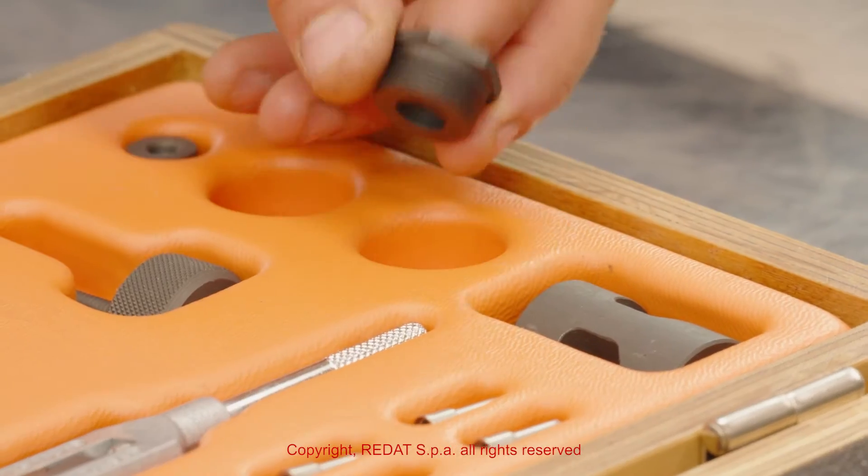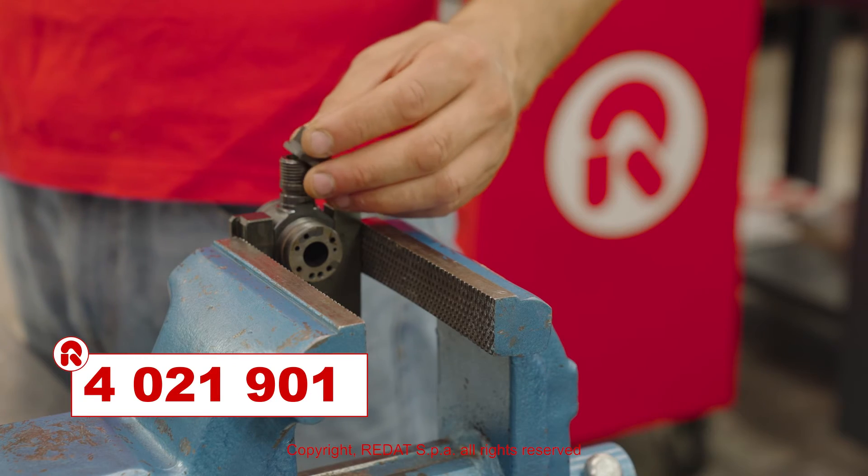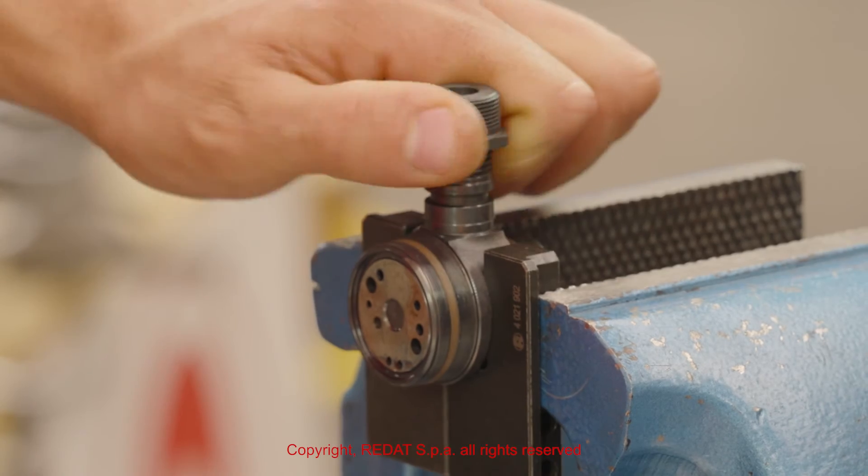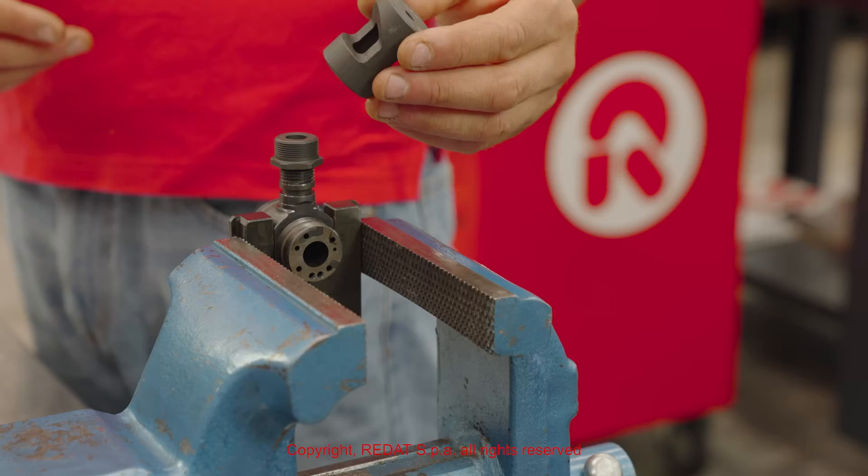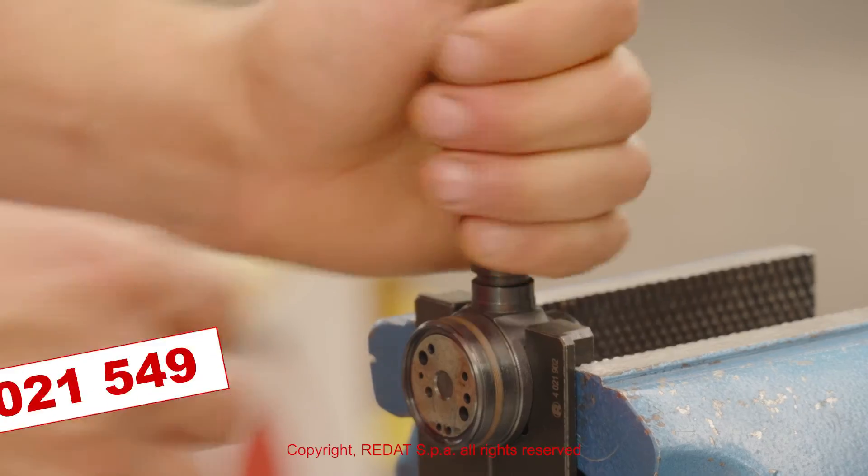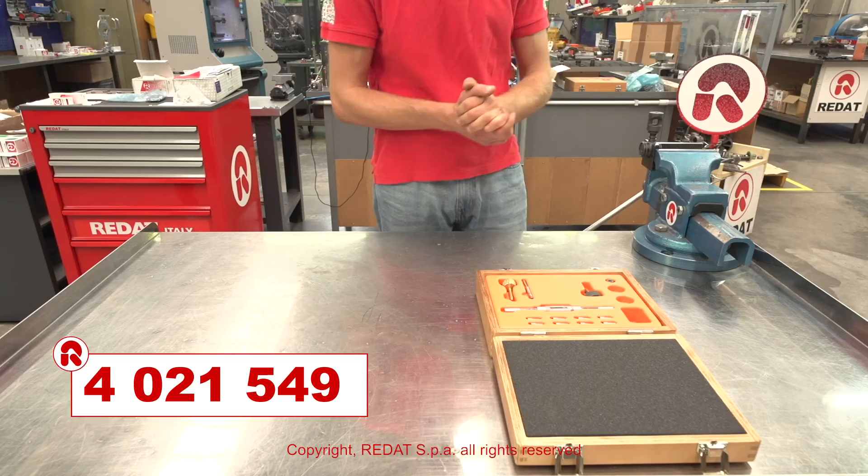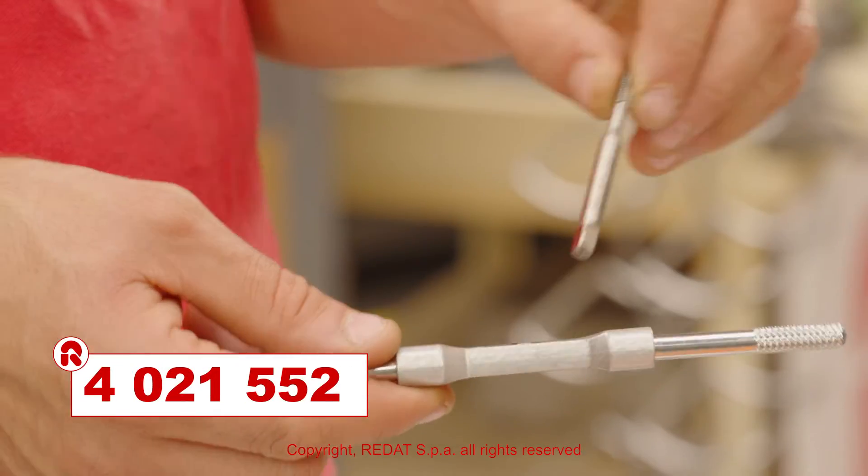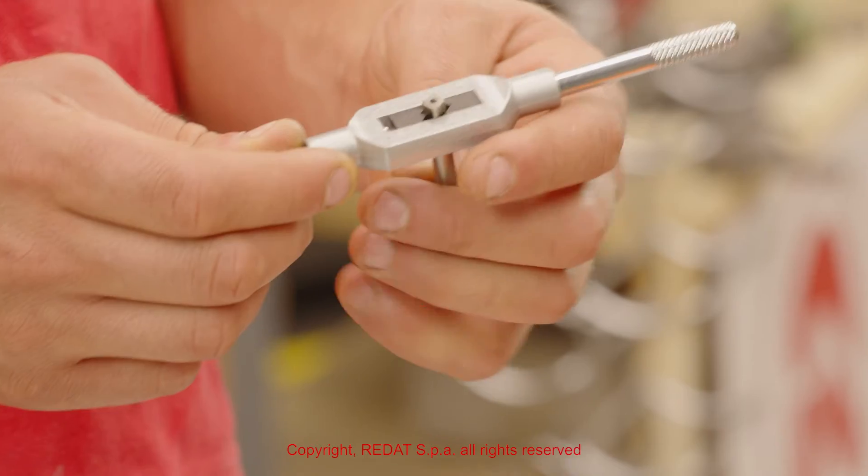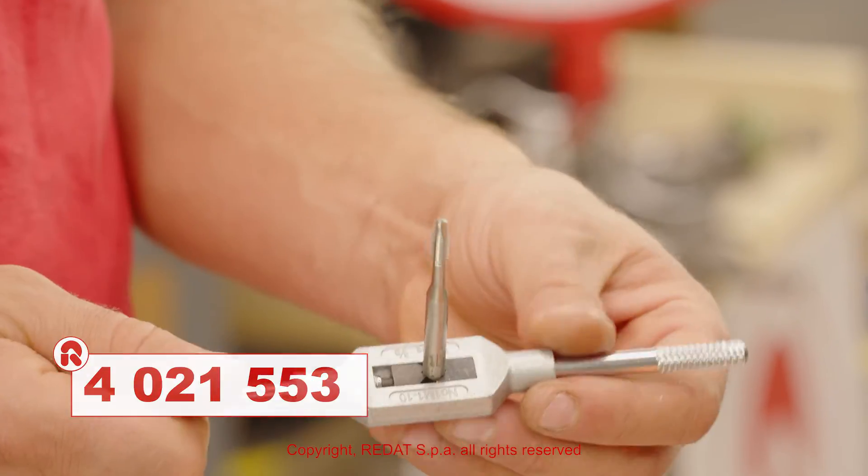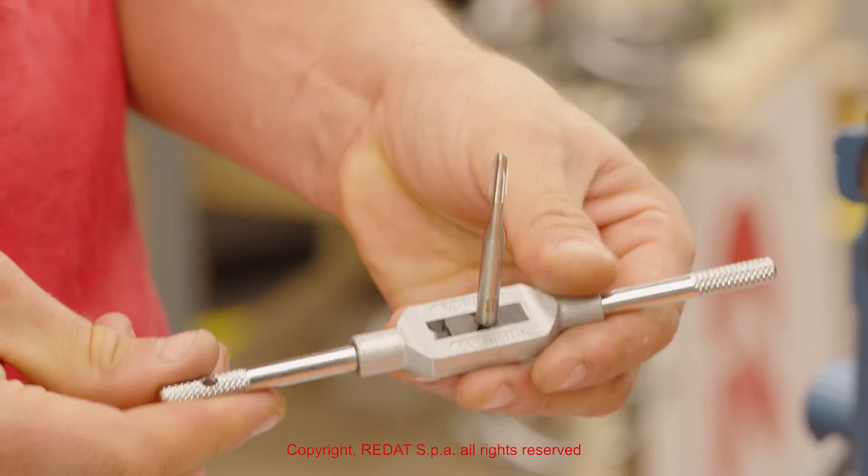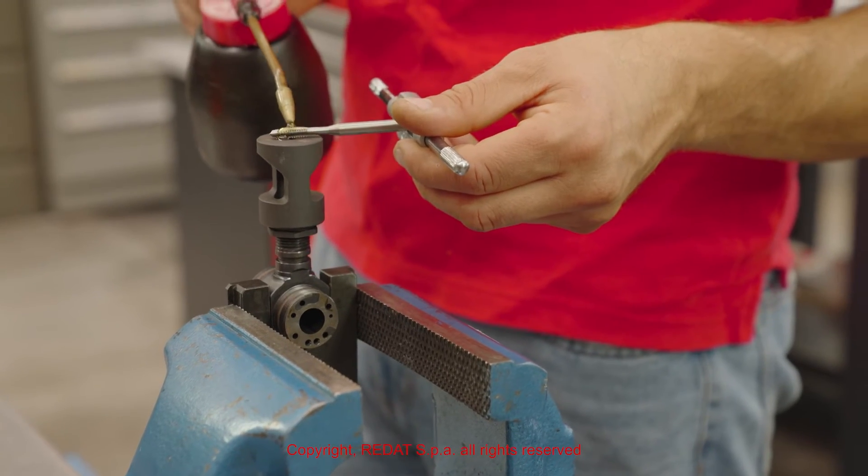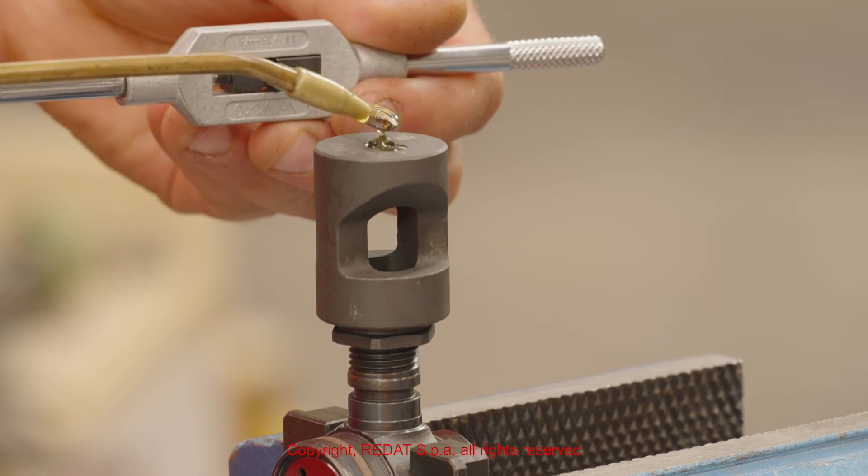We screw the threaded bush 4 0 2 1 9 0 1 onto the inlet connection of the injector body. On this threaded bush, we screw the tap guiding bush 4 0 2 1 5 4 9. We insert the tap 4 0 2 1 5 5 2 in the tap wrench 4 0 2 1 5 5 3 and in the guiding bush to thread the filter down as much as possible. During this operation, add some lubricant to prevent gripping.